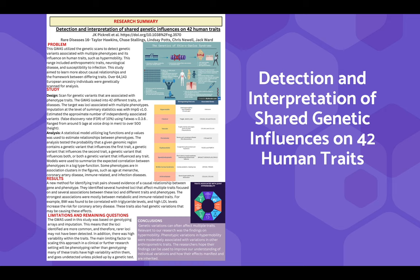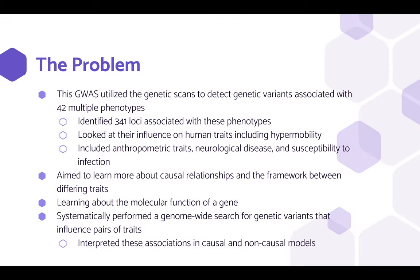This is a study on the detection and interpretation of shared genetic influences on 42 human traits, which we will go into in more depth in the next few slides. The GWAS utilized genetic scans to detect genetic variants associated with 42 multiple phenotypes. It identified 341 loci associated with these phenotypes and looked at their influence on human traits, including hypermobility, anthropometric traits, neurological disease, and susceptibility to infection. The GWAS aimed to learn more about causal relationships and the framework between differing traits, and the molecular function of a gene. It systematically performed a genome-wide search for genetic variants that influenced pairs of traits and interpreted these associations in causal and non-causal models.